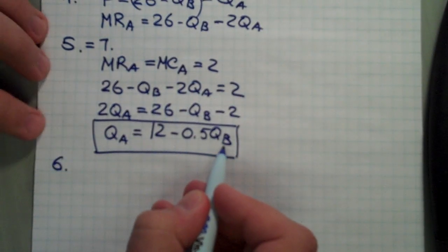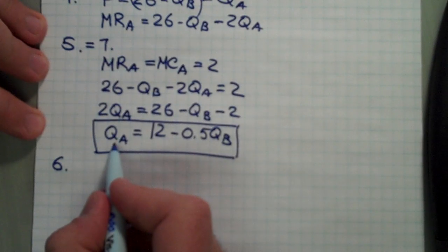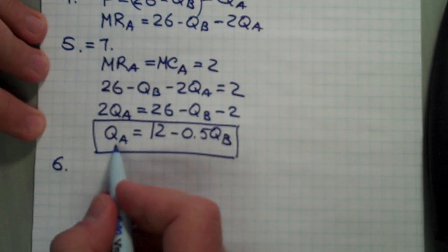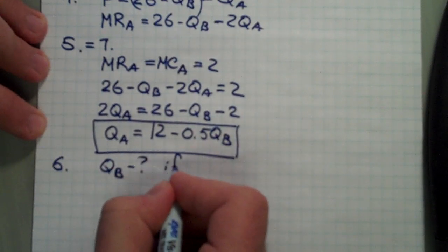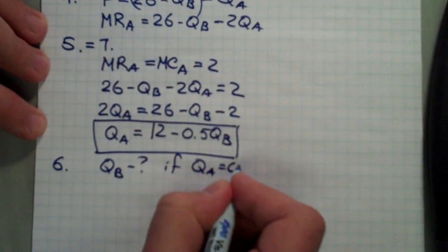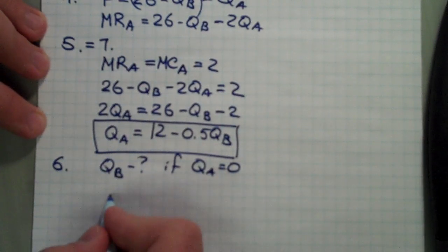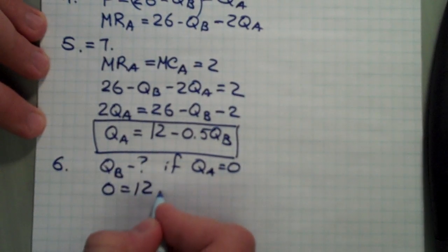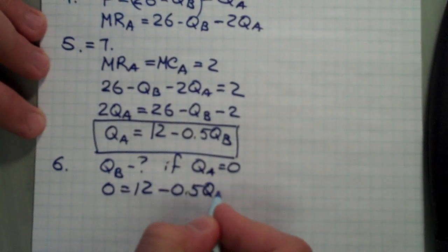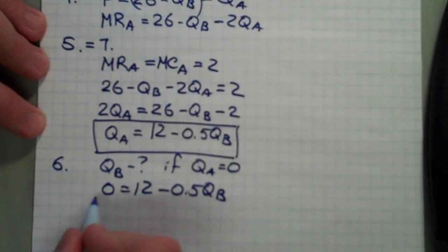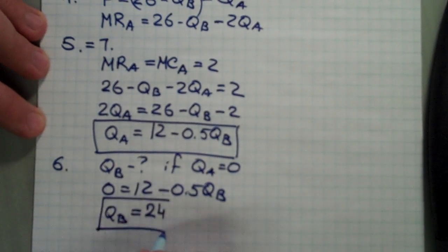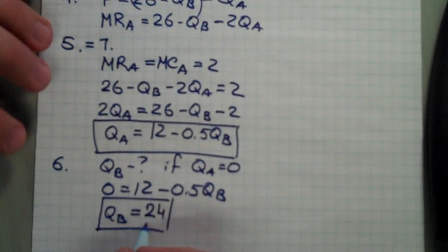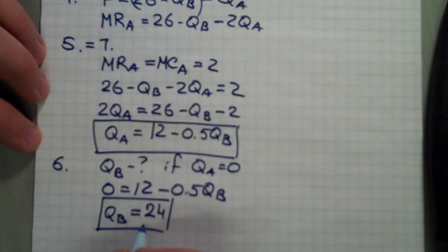Question number six: what quantity should firm B produce so that firm A will not enter the market? The question is asking: what is QB if QA equals zero? If QA equals zero, then 0 equals 12 minus 0.5QB, which gives QB equals 24. It turns out that 24 is also the output that would prevail in this market if it were a competitive market.